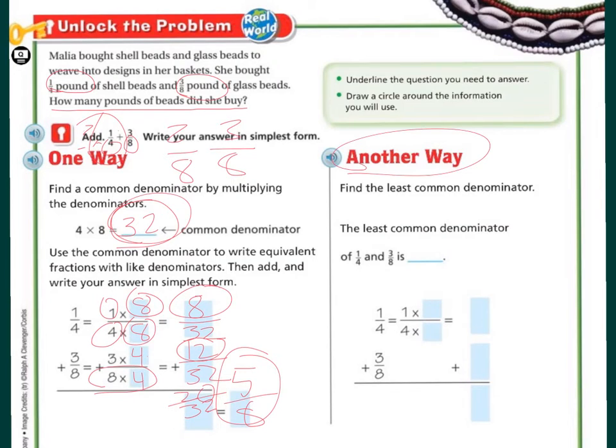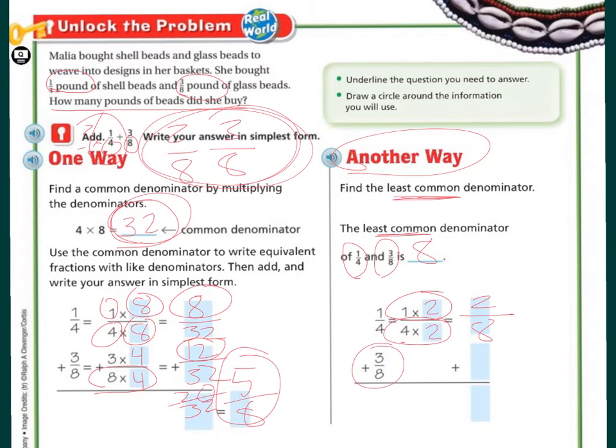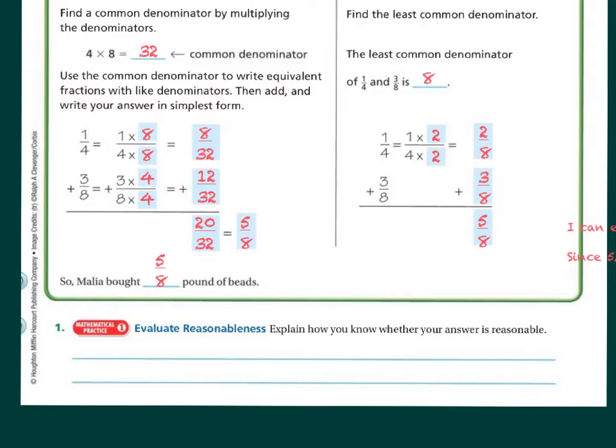You can see this another way is kind of what I've done here, where you're looking for the least common denominator. The least common denominator in 1 fourth and 3 eighths is 8. In order to make this bottom be 8, 4 times 2 would get me that. So whatever I do to the bottom, I have to do the top. 1 times 2 is 2, 4 times 2 is 8. I already have 3 eighths here, so I'm just going to bring it over. So then I have 2 plus 3, which is 5 eighths. As you see, when you do the least common denominator, you don't have to go through reducing. It makes it a little easier. So Malia brought 5 eighths pound of beads.